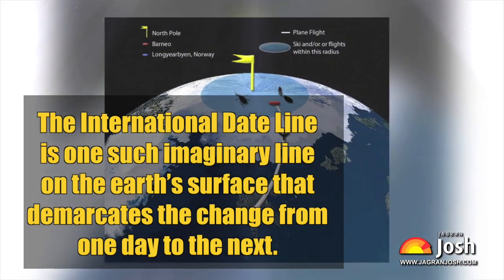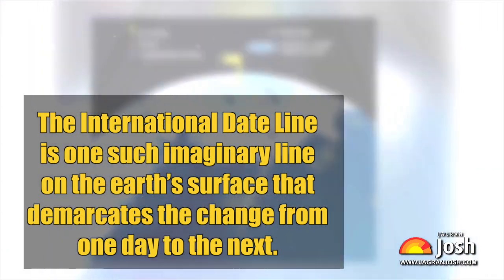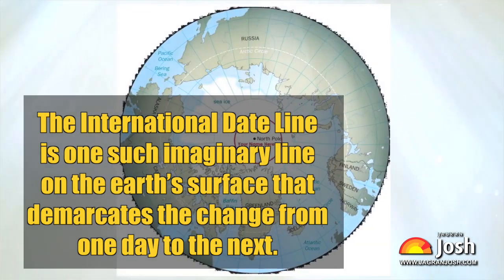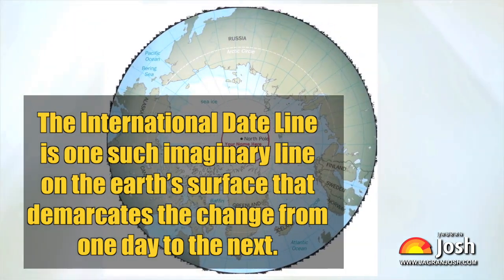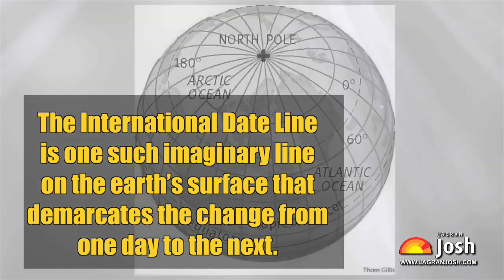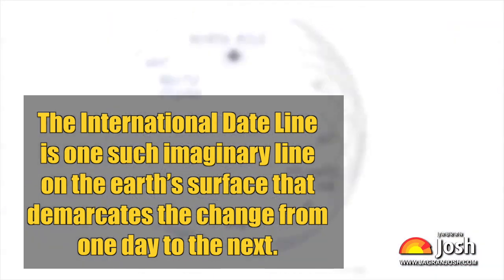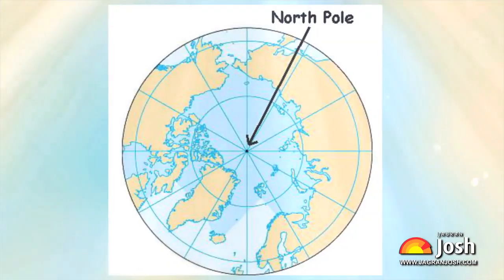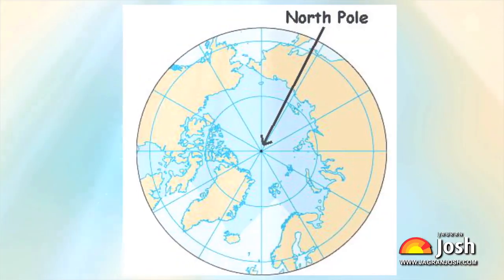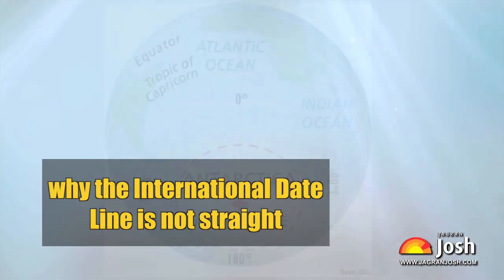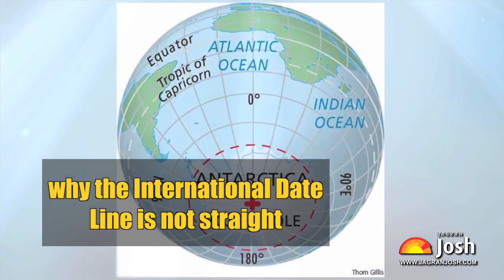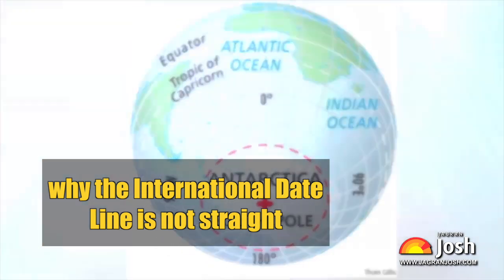The international date line is one such imaginary line on the earth's surface that demarcates the change from one day to the next. In this video, we will discuss why the international date line is not straight.